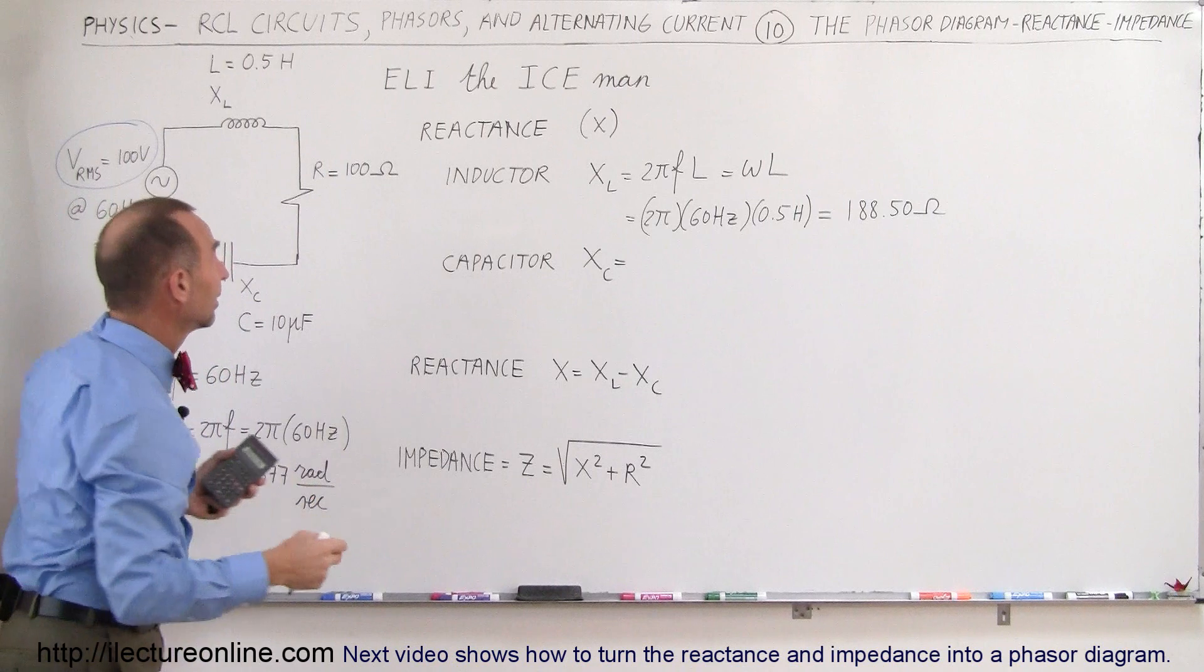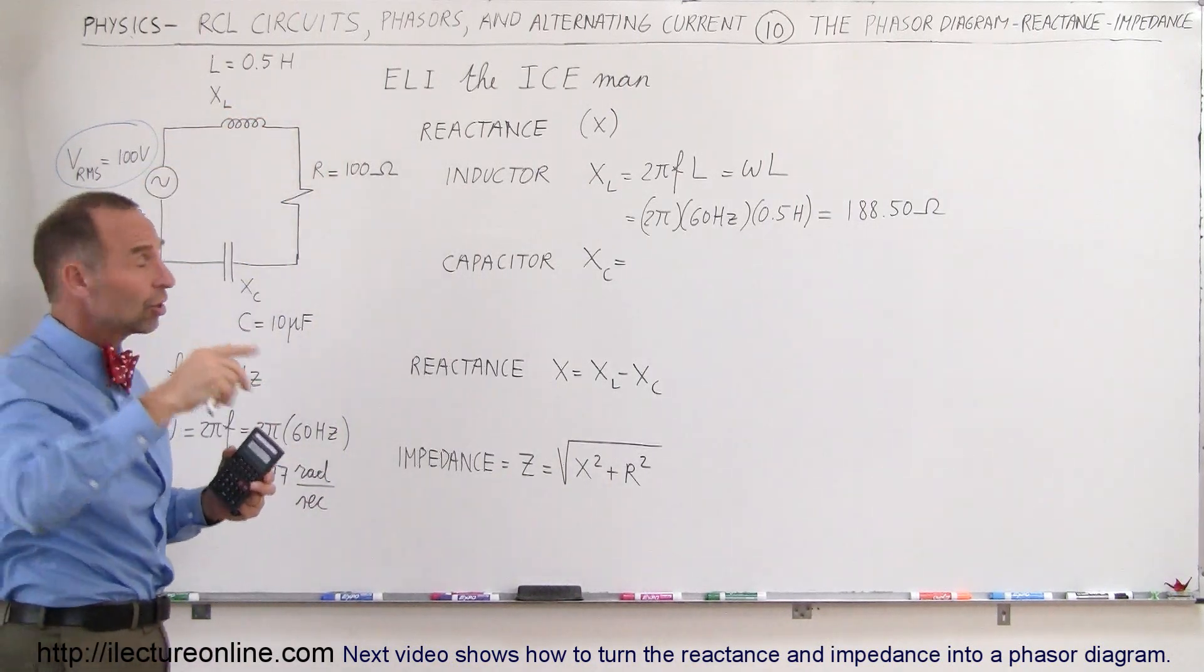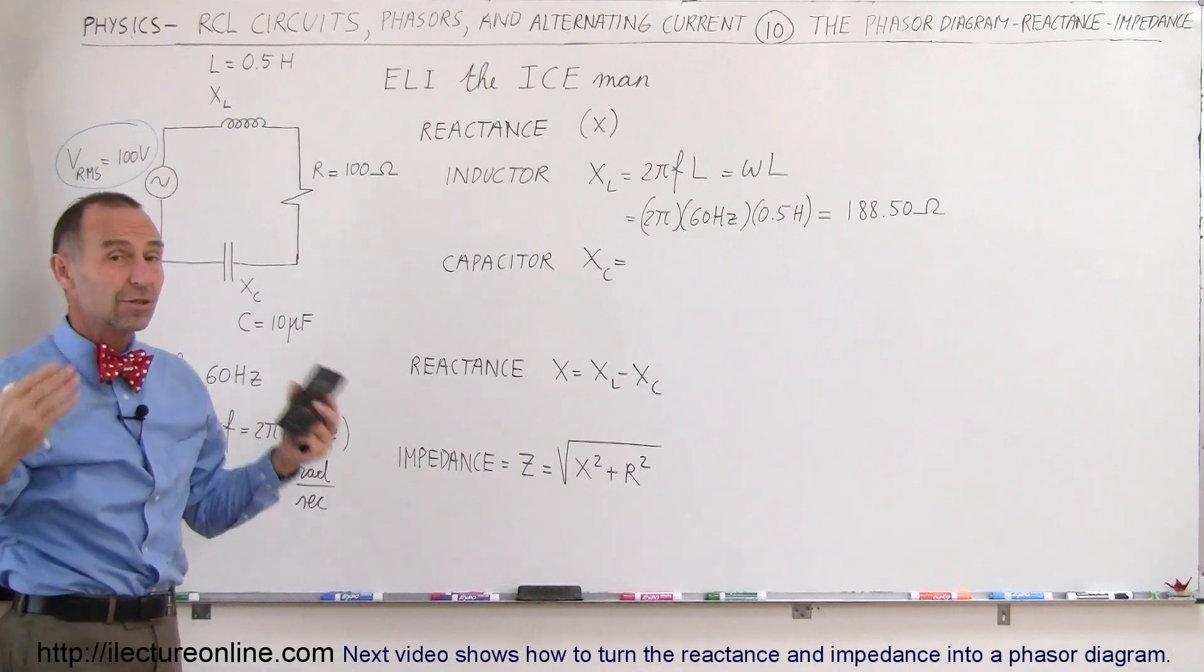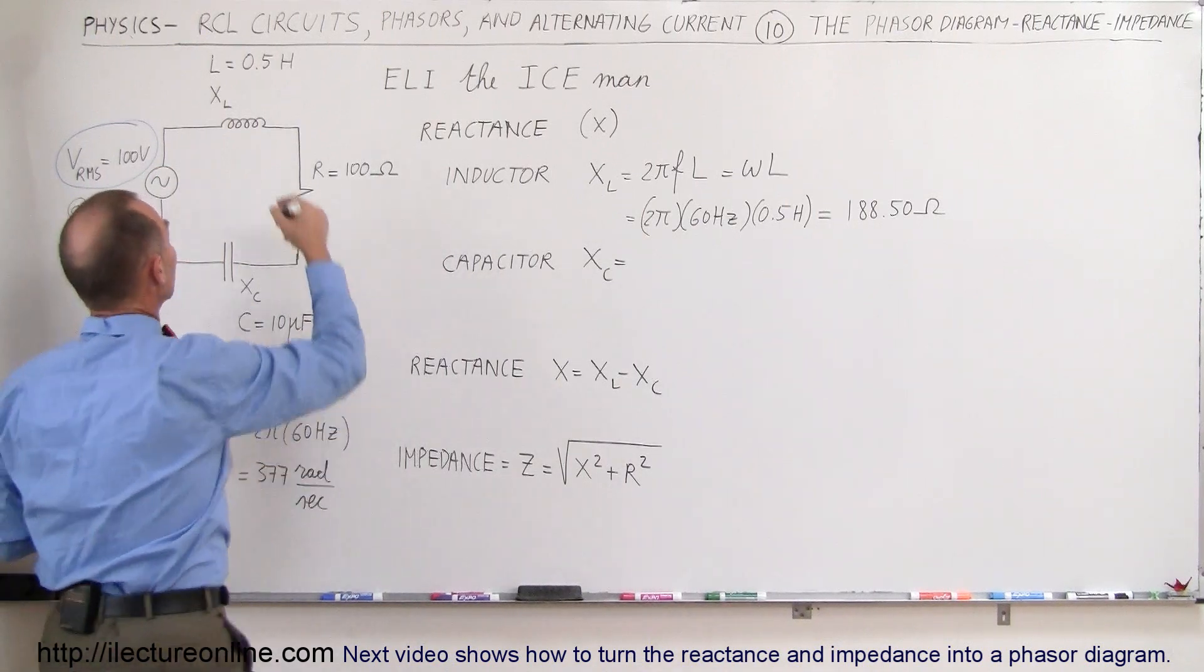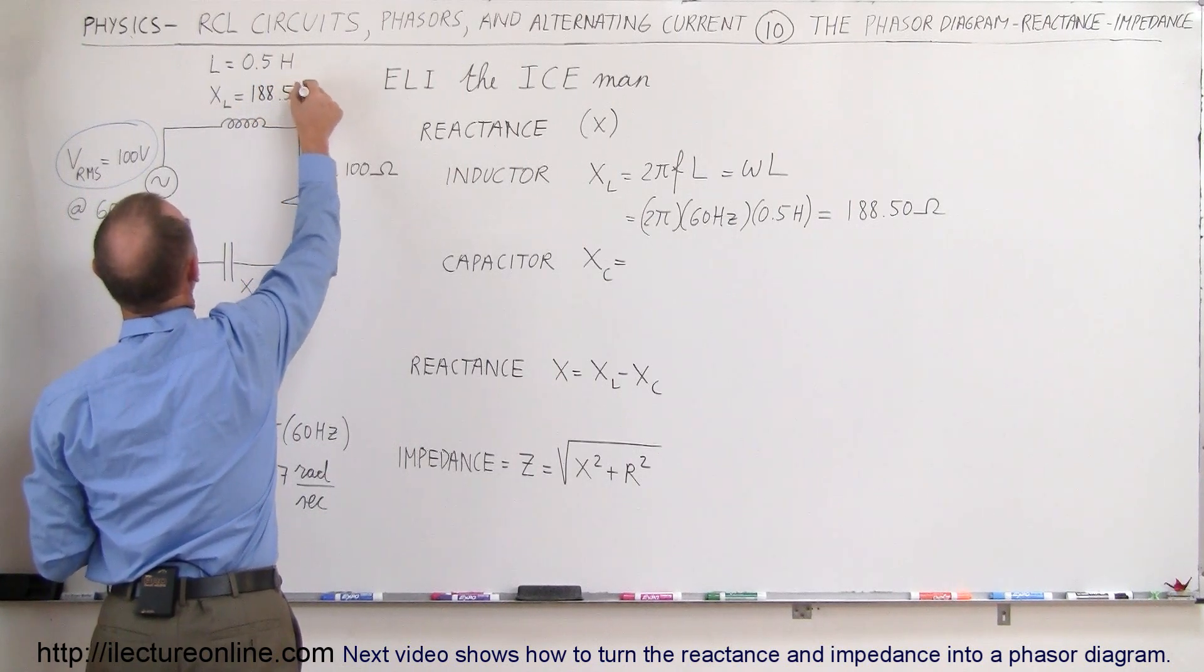Again, that only has opposition to the current here because the current will be changing. Once the current becomes steady state, the inductor would offer no resistance to the circuit. So this would be 188.50 ohms.